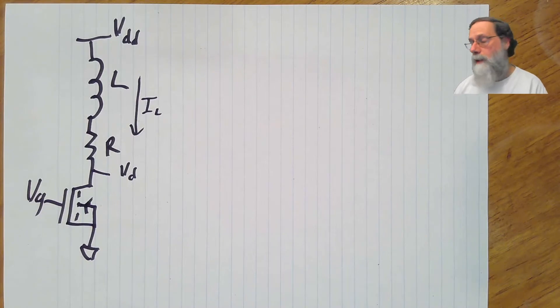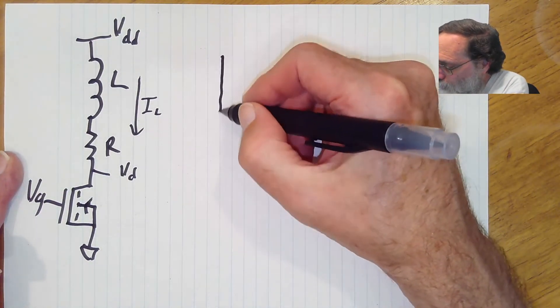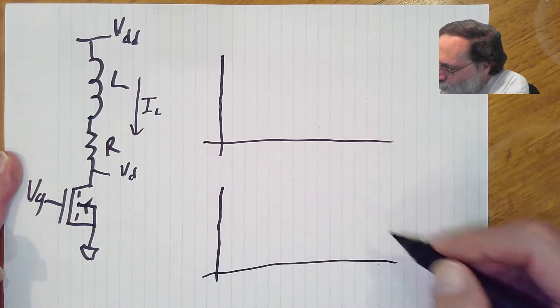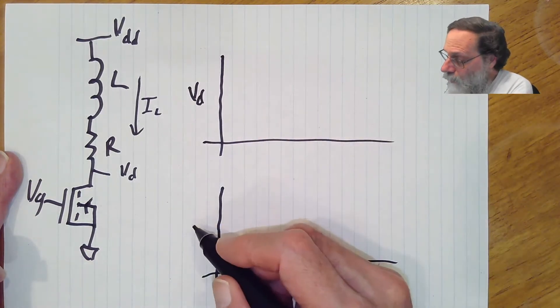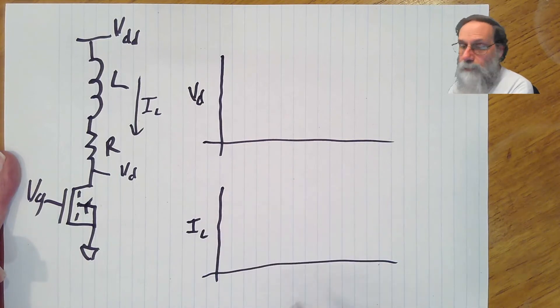It's not quite that simple, so let's take a look at what happens both when we turn it on and when we turn it off. So I'm going to look at two plots. One is what is the voltage on the drain, and the other one is what is the current through the inductor.